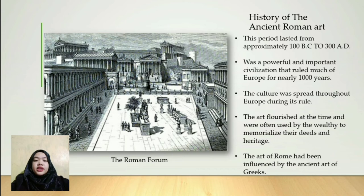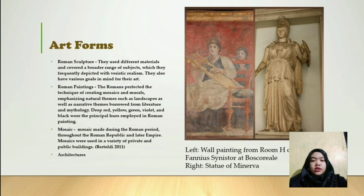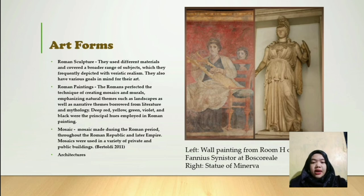The Romans admired Greek culture and art. After conquering Greece, they brought many Greek artists to Rome to make sculptures. The art of ancient Greece had a great influence on the art of ancient Rome. Roman sculpture used different materials and covered a broader range of subjects, which they frequently depicted with veristic realism. They also had various goals in mind for their art — a lot of times these sculptures depicted themselves or their ancestors.